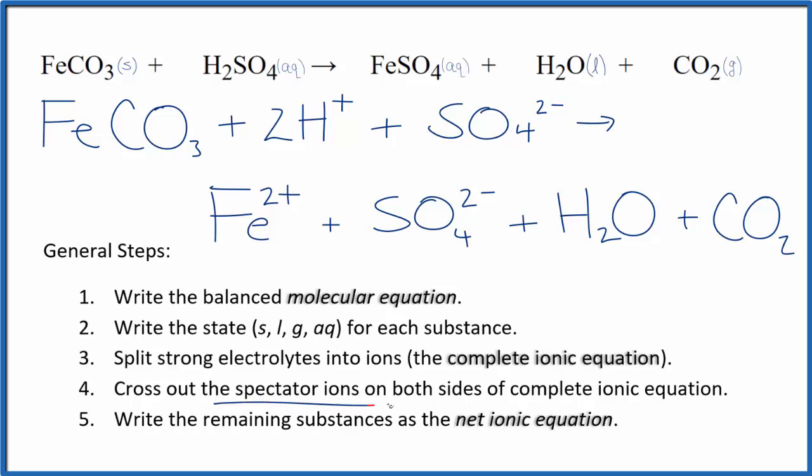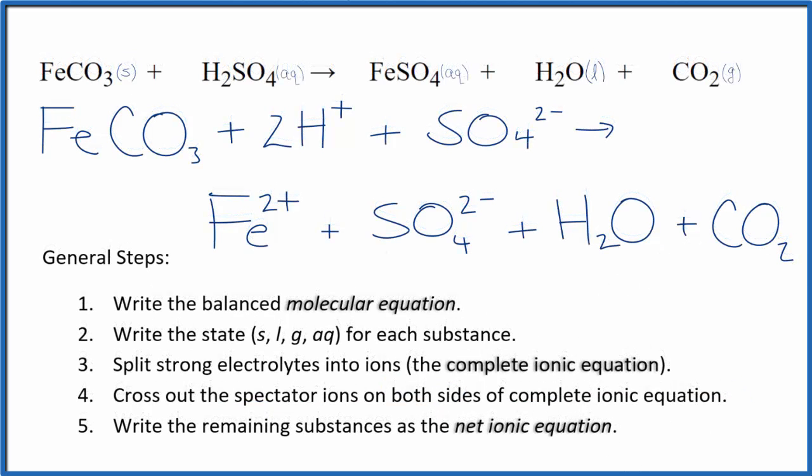Now we'll cross out spectator ions. They're on both sides of the complete ionic equation. So as we look across here, we have our reactants, and then on the bottom our products. This sulfate ion, that's the only thing that's the same on both sides. So the sulfate ion, those are the spectator ions. We cross those out.